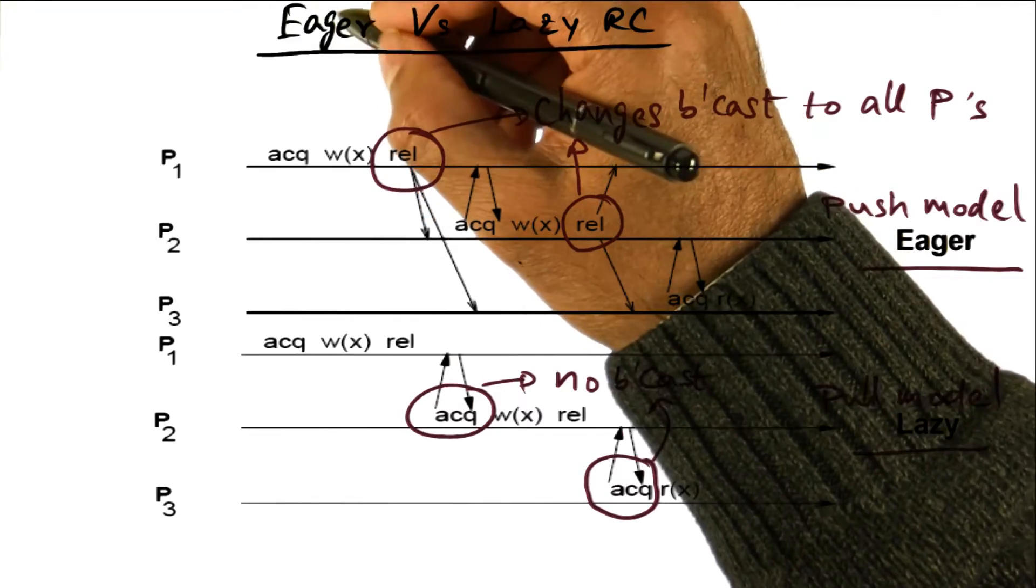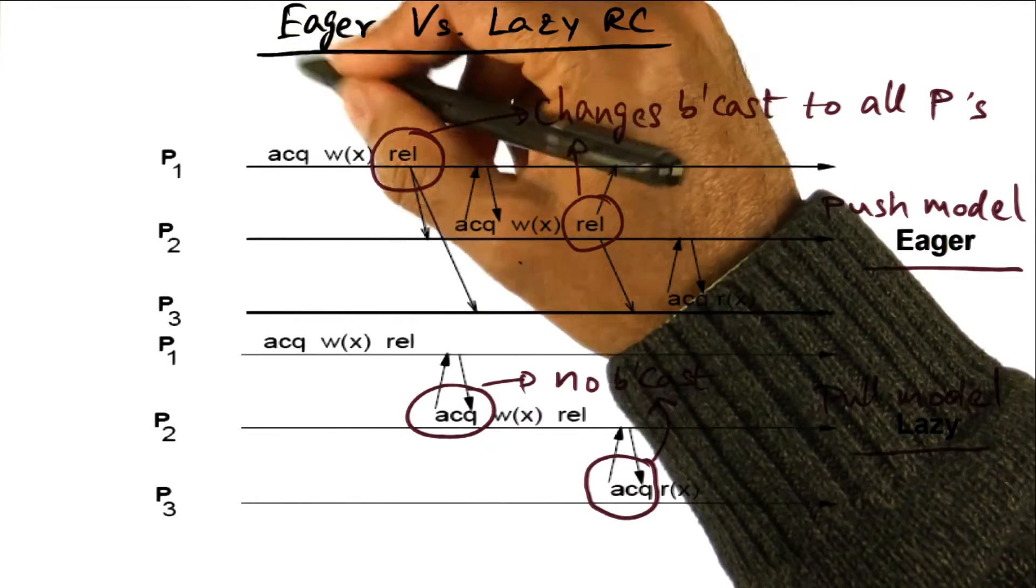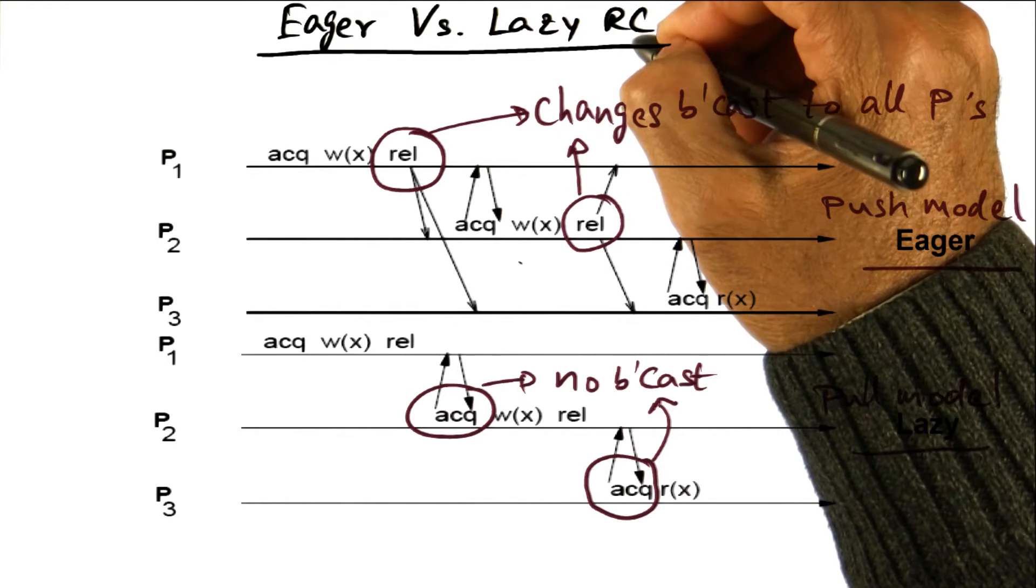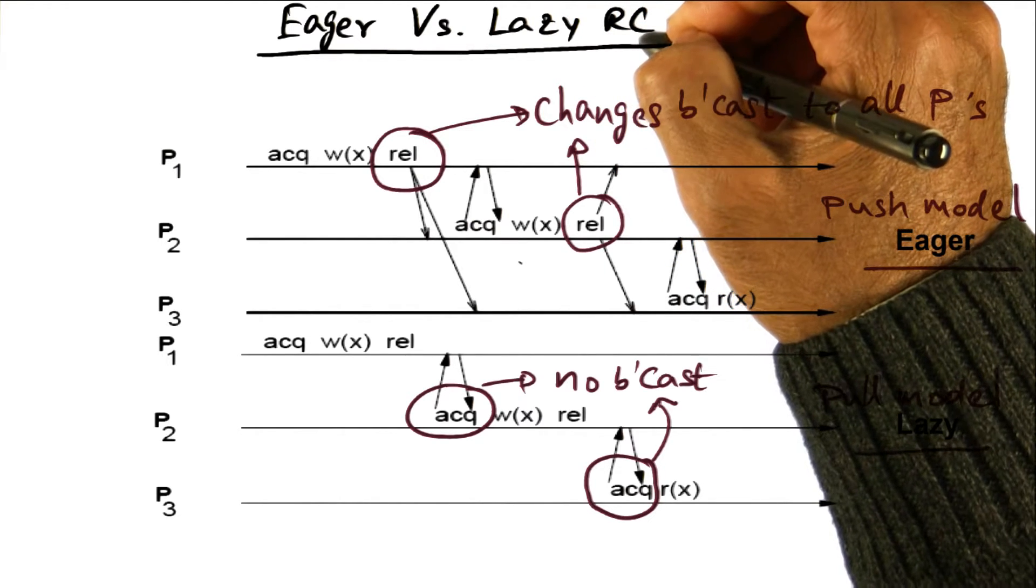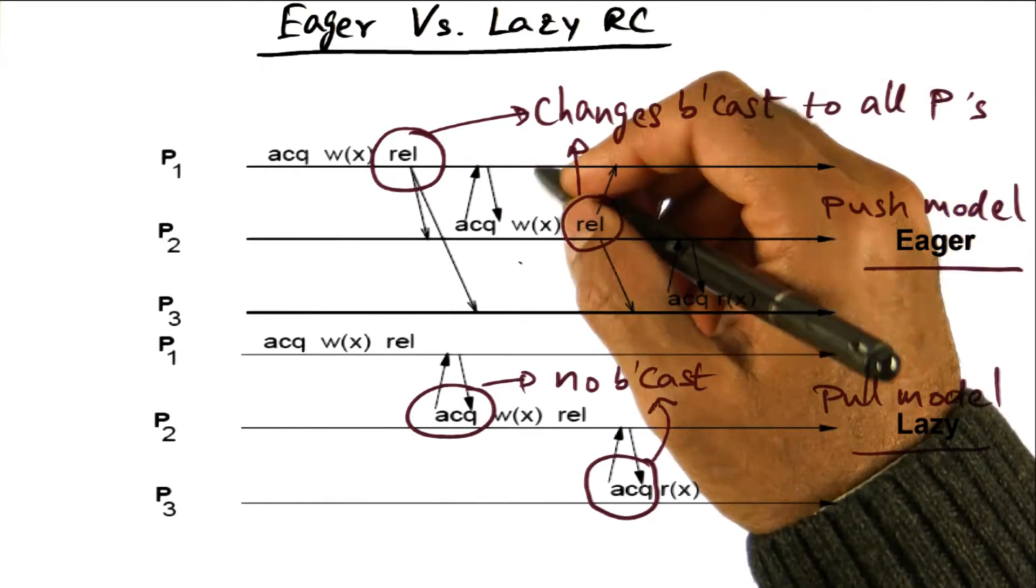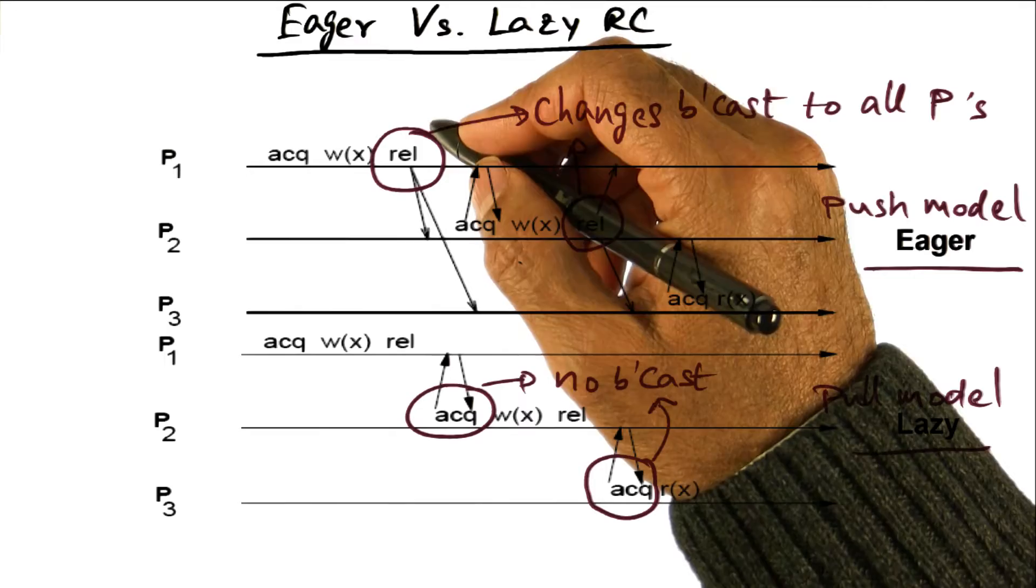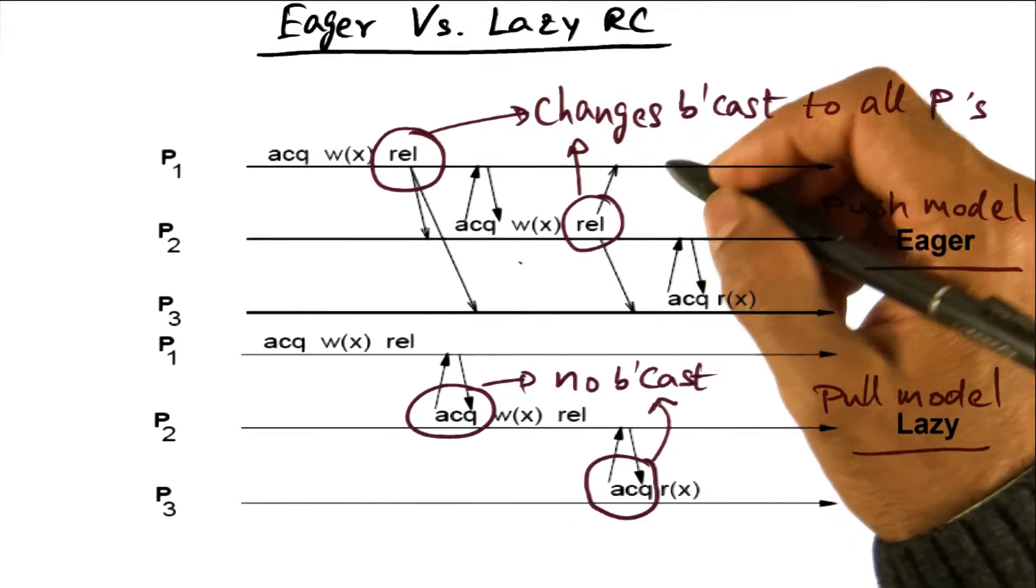So the vanilla RC is what is called the eager release consistent memory model. And the new memory model is called LRC or lazy release consistent memory model. Let's see the pros and cons of LRC with respect to vanilla RC or lazy RC with respect to eager RC.